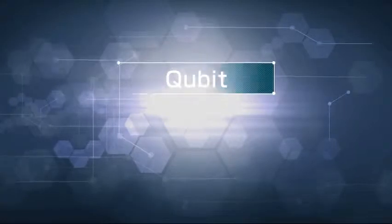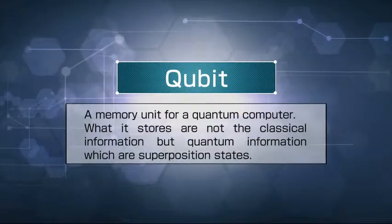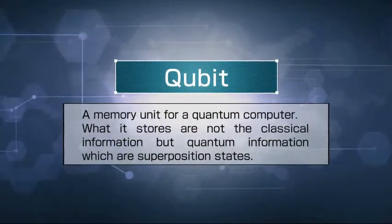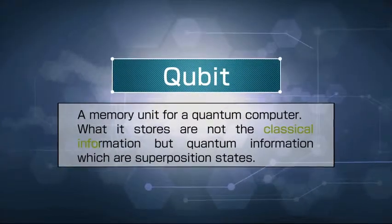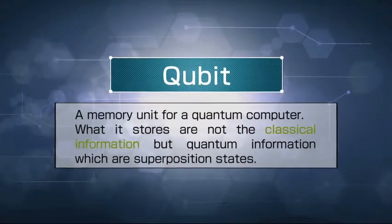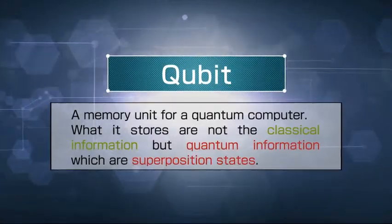Quantum memory is a memory unit for a quantum computer. It serves the same purpose as that of a regular memory unit in a standard computer. However, what it stores are not the classical information constituents 0 and 1, but quantum information which are superposition states.